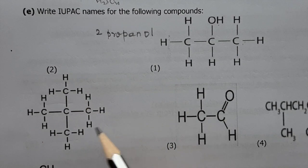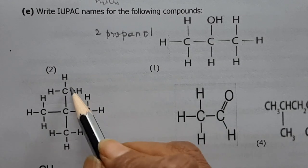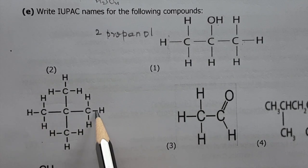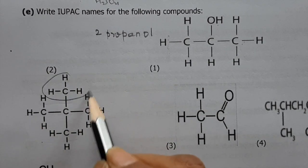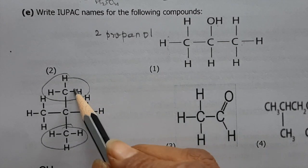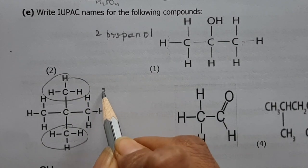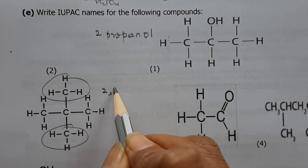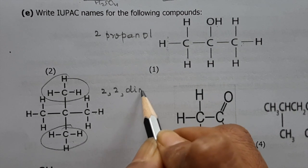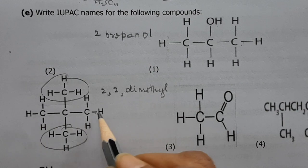(ii) Taking the longest chain — it is three carbons either way, so 'prop-'. It has two CH₃ groups on the second carbon, giving two methyl groups, so the IUPAC name is 2,2-dimethylpropane.